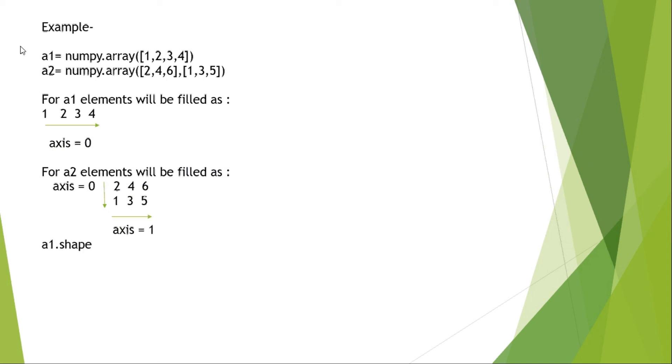If you write A1.shape, the A1 is having 4 elements. According to shape, which refers to the number of elements in each axis, for the first array, axis 0 has 4 elements. And there is no axis 1, so accordingly the shape will be (4,). Because axis 0 has 4 elements and there is no other axis. For A2, axis 0 has 2 elements and axis 1 has 3 elements, so the shape will be (2, 3).